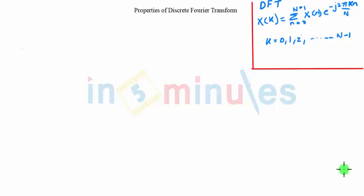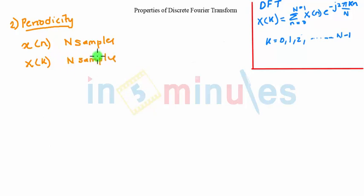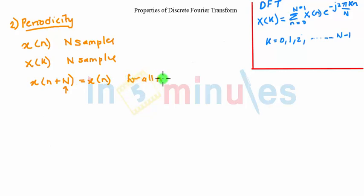In this video we are going to study the property of periodicity. It states that if the sequence x is periodic with N samples, then the N-point DFT x is also periodic with N samples. If x of (n + N) equals x of n for all n, then similarly x of (k + N) equals x of k for all k.